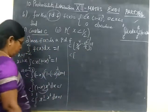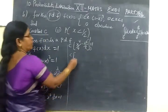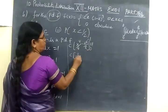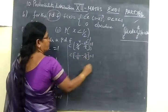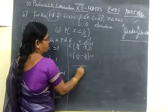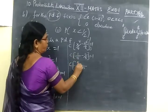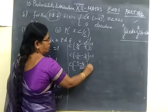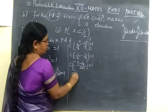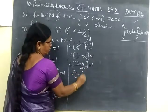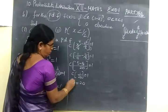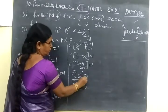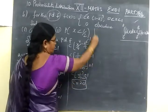If we integrate, you will get x power 4 by 4 minus x power 5 by 5 equal to 1. So C bracket, limit is 0 to 1. So 1 power 4, that means 1, 1 by 4 minus 1 by 5 equal to 1. So LCM is 20. Then 5 minus 4, cross multiply, equal to 1. So C bracket, 1 by 20 equal to 1. That means C equal to 20.